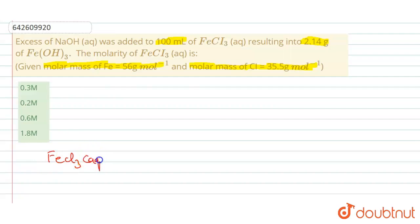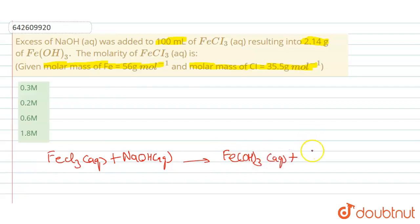FeCl₃ (aq) + NaOH (aq) results in the formation of Fe(OH)₃ plus NaCl (solid). Now we balance this reaction: OH is 3 on the product side and 1 on the reactant side, so we multiply NaOH by 3, giving us 3NaOH, and 3NaCl on the product side.